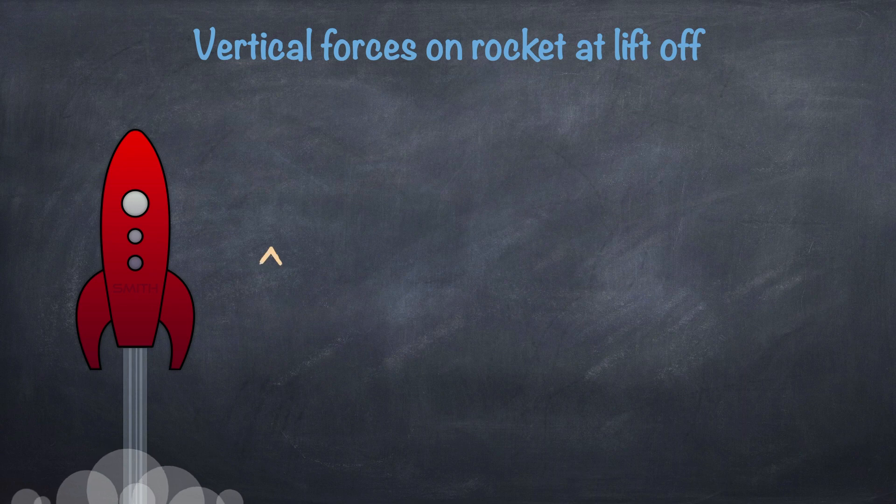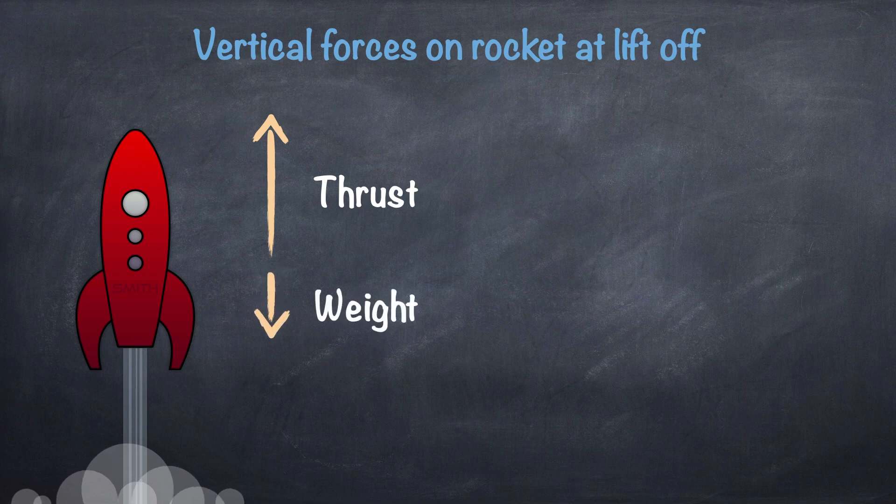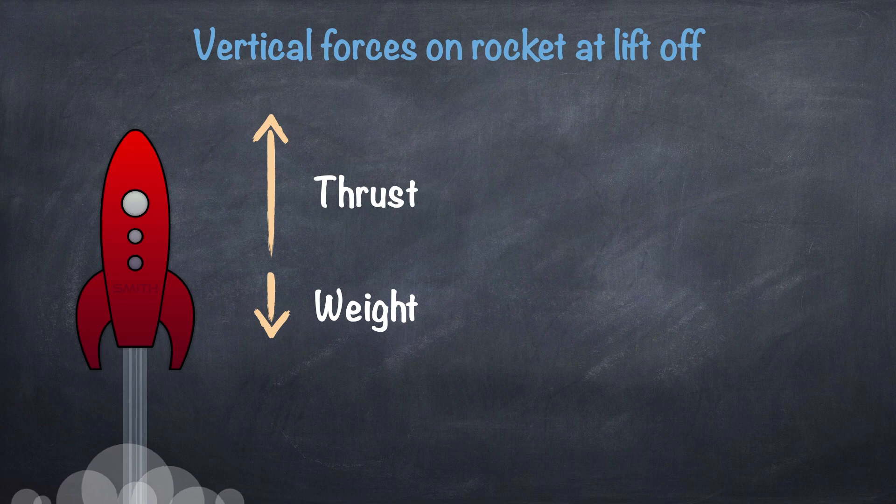You might also be asked to draw arrows to indicate their direction. First off, we have the thrust force which acts upwards on the rocket. The second force acting vertically on the rocket is its weight, which of course acts downwards. If you need to calculate the weight force, which is something we'll do in the third question, then this is the equation to use.